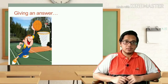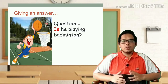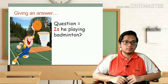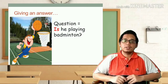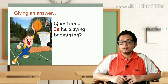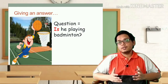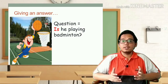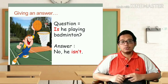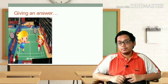Now let's look at another example. Is he playing badminton? Look at the picture — is the boy playing badminton? No, the answer is no. He's not playing badminton; he is playing basketball. When we want to give an answer, the answer is: No, he isn't. We use the word 'isn't' because the answer is no.